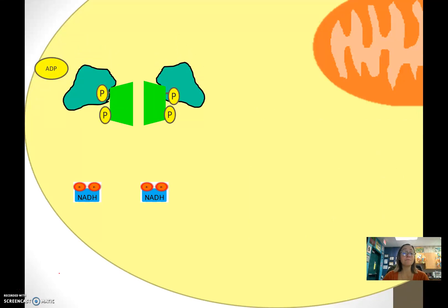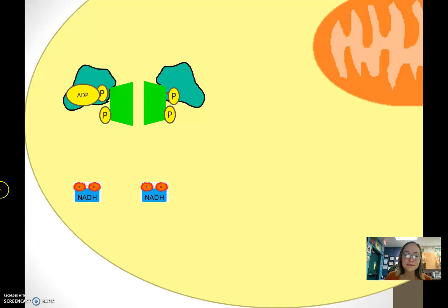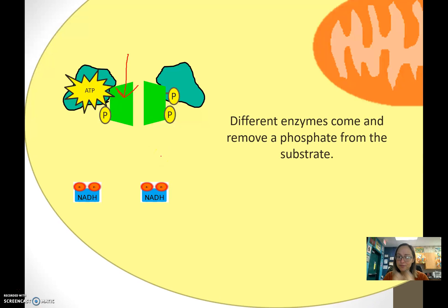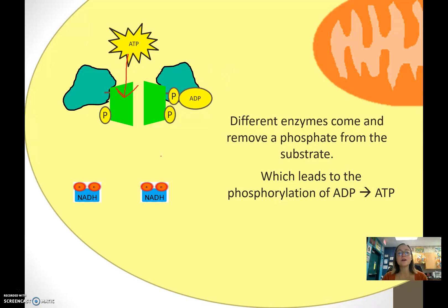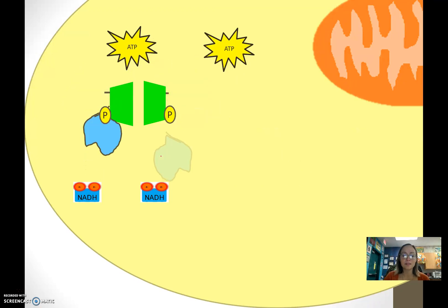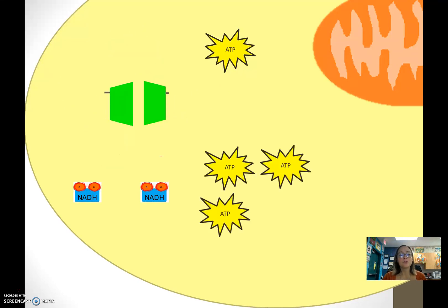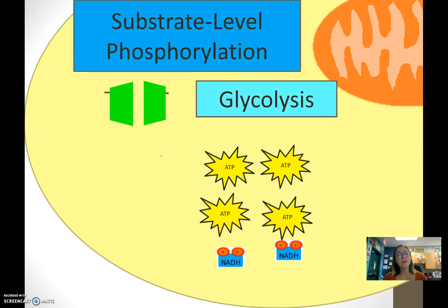In glycolysis, we're going to make some ATP. Enzymes come and take a phosphate from the substrate — we call this substrate-level phosphorylation, because the phosphate is coming from a substrate. We perform substrate-level phosphorylation four times, making ATP through this process.